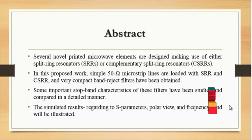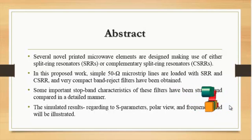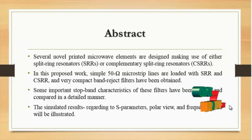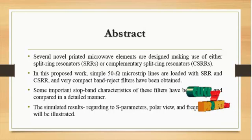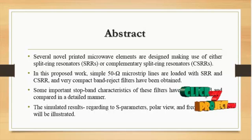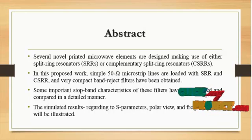In this proposed work, simple 50-ohm microstrip lines are loaded with SRR and CSRR, and very compact band reject filters have been obtained. The stop band characteristics of these filters have been studied and compared in detail. Finally, results are presented regarding S-parameters, polar view, 3D and 2D radiation patterns, and the frequency band. This simulation is done using HFSS software — the High Frequency Structure Simulator.